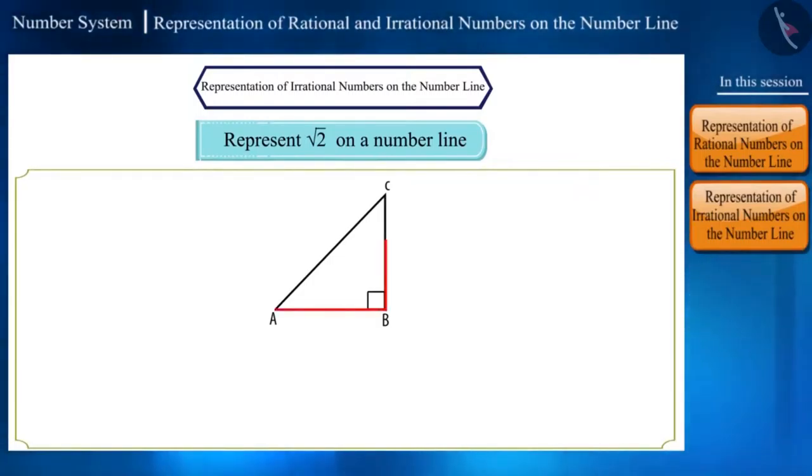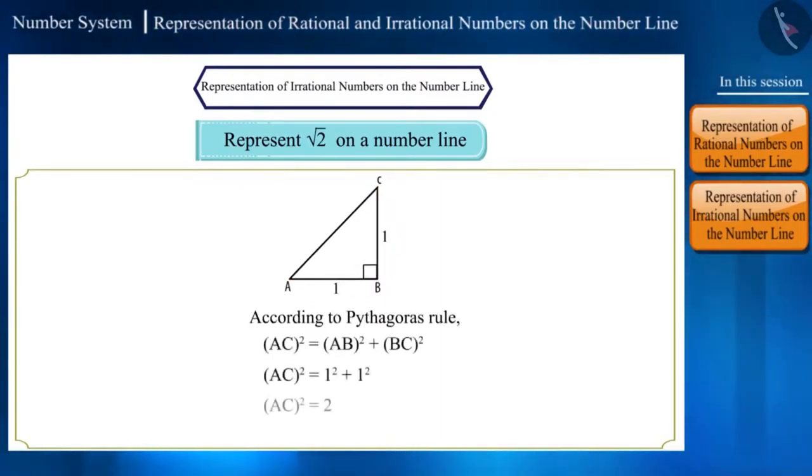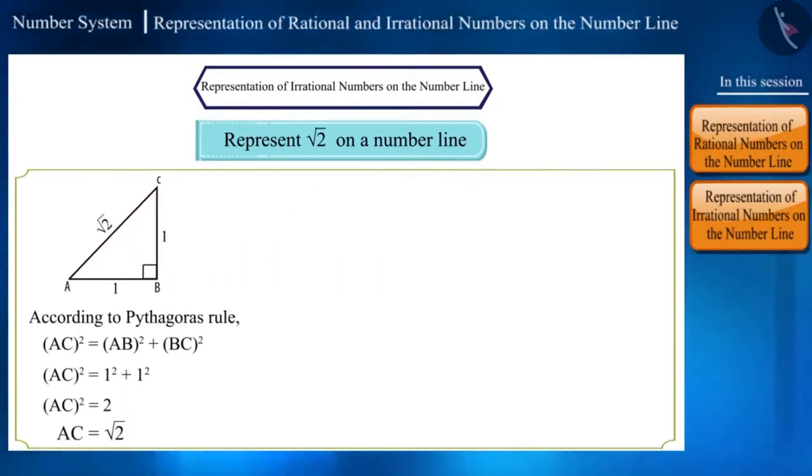Now, if we consider a right-angled triangle ABC where the lengths of AB and AC are one unit, according to Pythagoras rule, we will get the length of AC as root 2. We know that root of 1 is 1 and root of 4 is 2. That means, root 2 will lie somewhere between 1 and 2 on the number line.